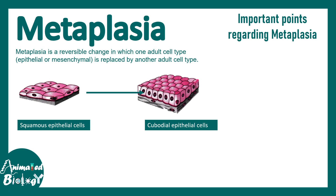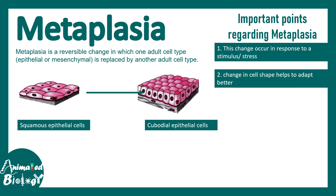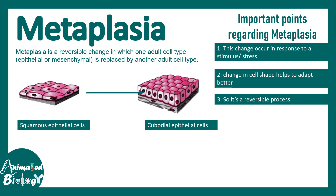Here are a few important points regarding metaplasia. This change occurs in response to a stimulus or stress, and the change in cell type helps the cell adapt better. It is not only a change in shape — it is exactly a change in the cell type. For example, cuboidal epithelium and squamous epithelium are totally different cell types. It is a reversible process: when the stress or stimulus is withdrawn, the original cell type can also be restored.